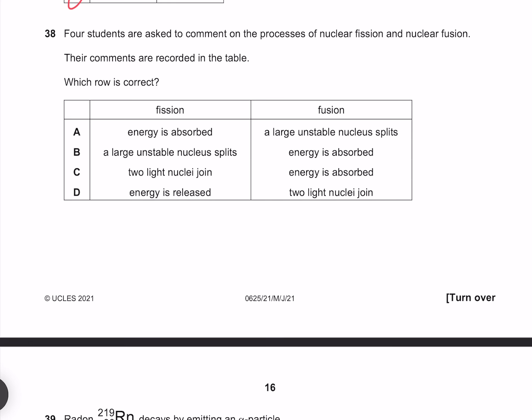4 students are asked to comment on the processes of nuclear fission and nuclear fusion. Their comments are recorded in the table. Which row is correct? During fission energy is not absorbed it is released, and it involves a large unstable nuclear splitting not joining. As with fission energy is released in fusion it is not absorbed. It involves two light nuclei joining not a large unstable nuclear splitting. Our answer must therefore be D.